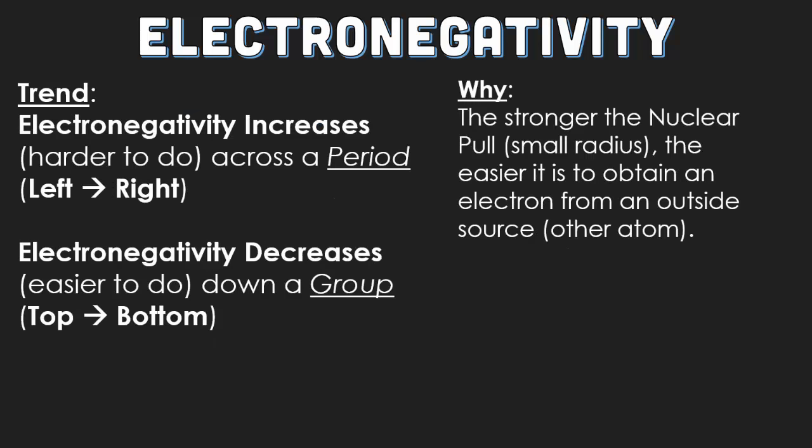Electronegativity is going to increase across a period from left to right. Electronegativity will also decrease as you go down a group. The reason why is the stronger the nuclear pull from a small radius, the easier it is to obtain an electron from an outside source, which is always going to be another atom. That means electronegativity and ionization energy share the exact same trends. It's all about the size of your atom.